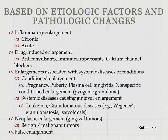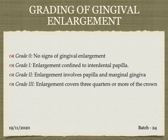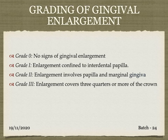We will also look at the grading of gingival enlargement. Gingival enlargement is graded into three grades. Grade 0: no sign of gingival enlargement. Grade 1: enlargement confines to the interdental papilla. Grade 2: enlargement involving interdental papilla and marginal gingiva. Grade 3: when the enlargement covers three quarters or more of the crown, it is classified as grade 3.